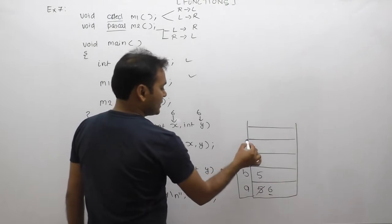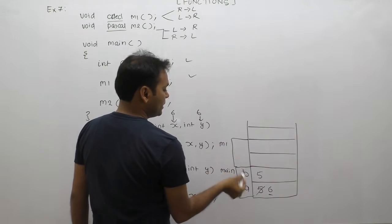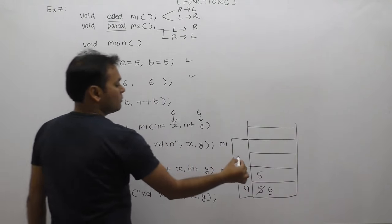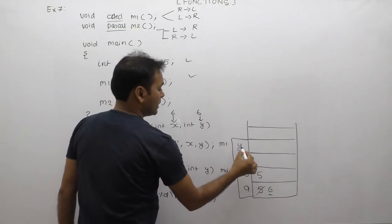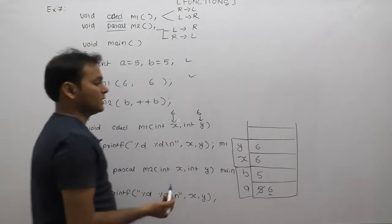For function m1, variables are allocated on top of the stack: x and y, both having the same initial value 6.